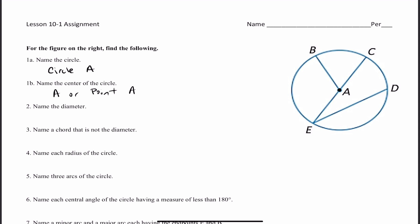Number 2: name the diameter. A diameter is a chord — a chord is a segment where the endpoints are on the circle. If that chord goes through the center of the circle, we call that the diameter. This right here is an example of a diameter: it's a chord, and it goes through the center. So you can call this segment EC, or segment CE — both refer to the same diameter.